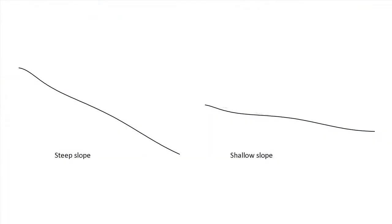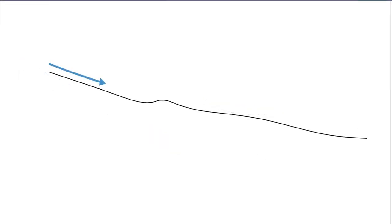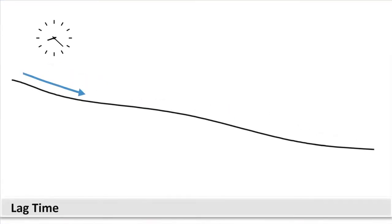Steep slopes in watersheds tend to generate more runoff than do gentle slopes. On gentle slopes, water may temporarily pond and later soak into the soil. On steep slopes, water cannot pond, which contributes to a shorter time for the rainfall to reach the river channel, known as lag time. Steep slopes usually also have decreased soil depth, which can also limit infiltration.